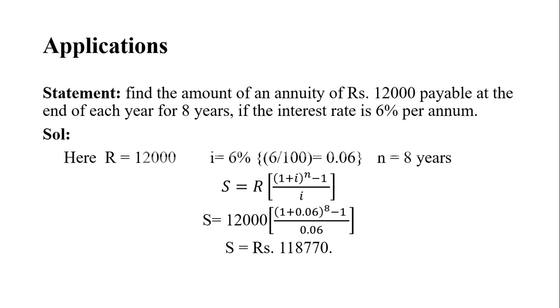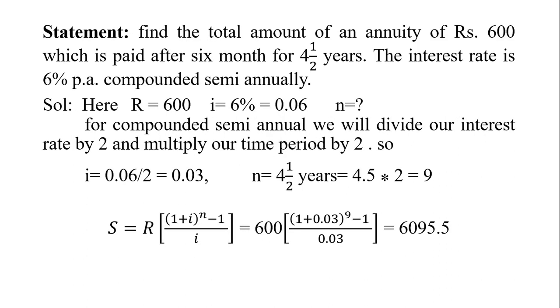Another application: find the total amount of an annuity of Rs. 600 which is paid after six months for four and a half years. The interest rate is 6% per annum compounded semi-annually. The major thing to notice is compounded semi-annually.